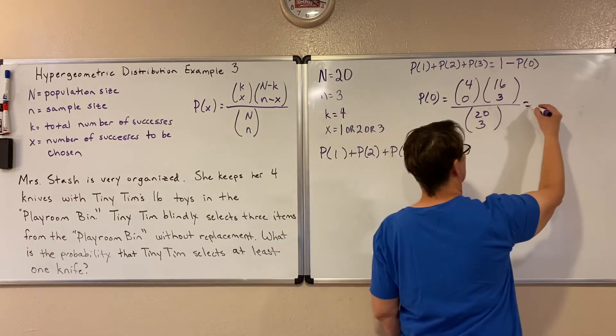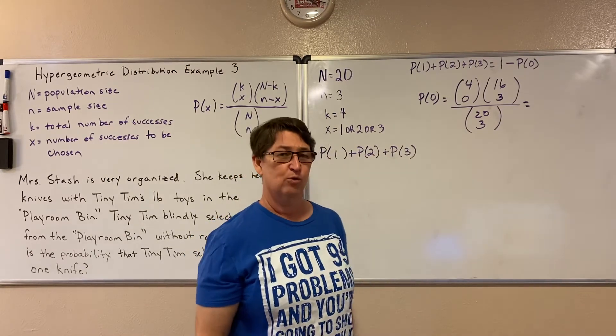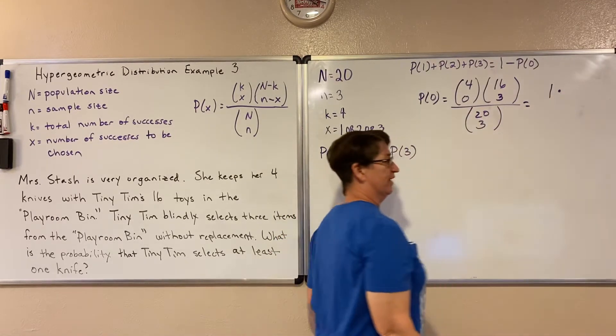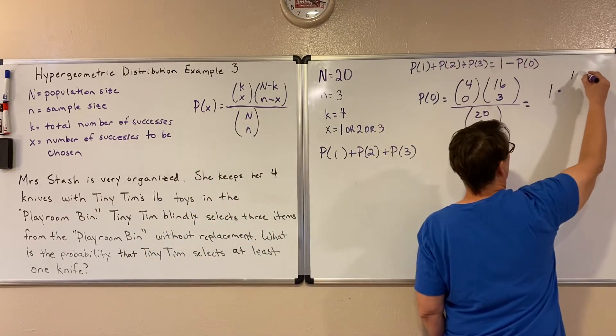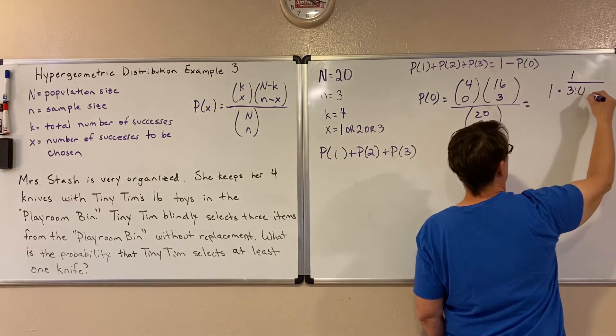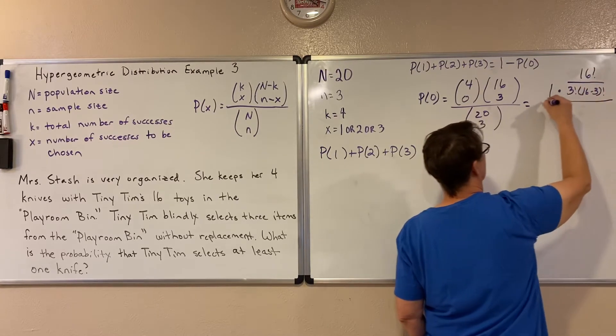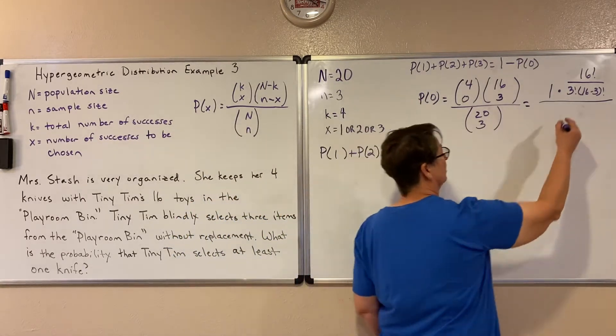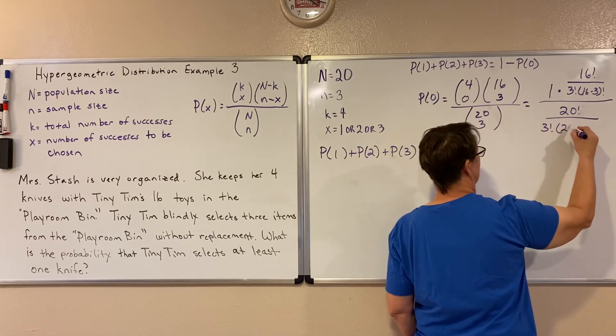Now it's just a matter of doing the combinations. Four choose zero. Hopefully you've had enough work now with combinations that you know when we're choosing zero items, we're just going to end up with one there. 16 choose three. I'll put in the formula. So I have on bottom, I'm going to have three factorial and 16 minus three factorial. And on top, I'm going to have 16 factorial. Then in the denominator, I'm doing 20 choose three. So 20 factorial over three factorial times 20 minus three factorial.